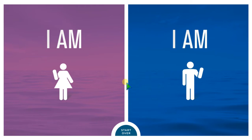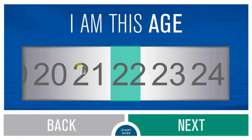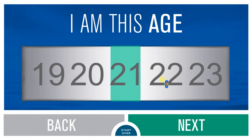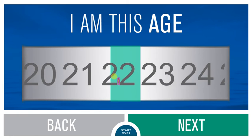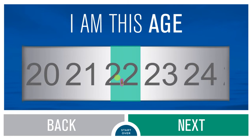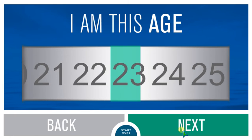First, April needs to know a bit about the user before the aging can start. On this screen, the user enters their gender. We'll select female. Then enter current age by swiping back and forth along the bar. Once the age is entered, press next.